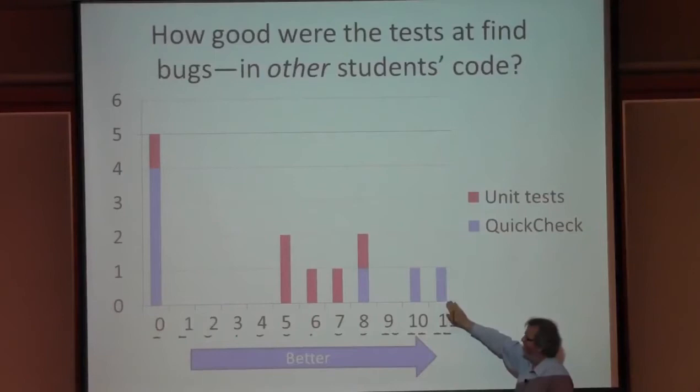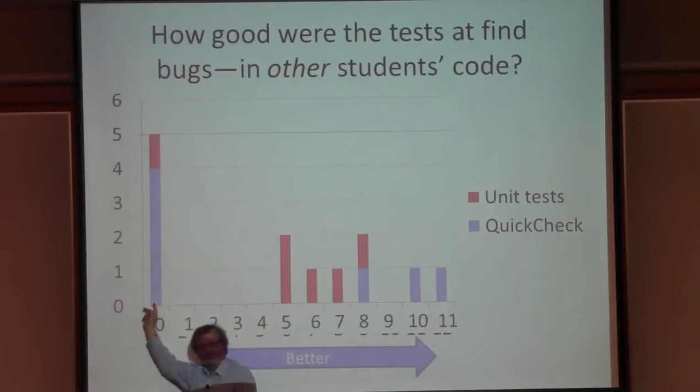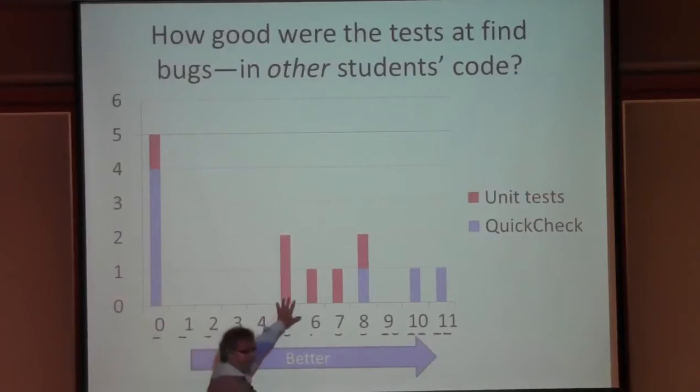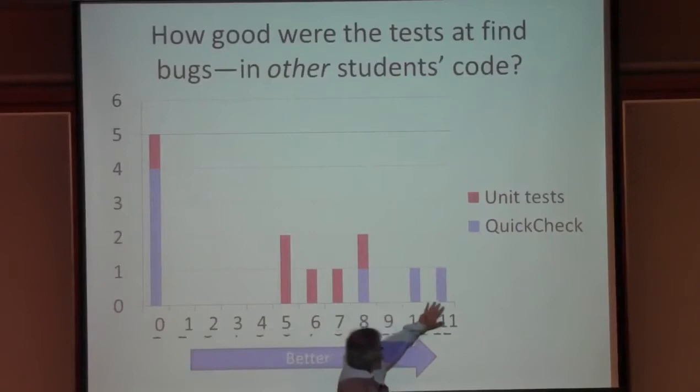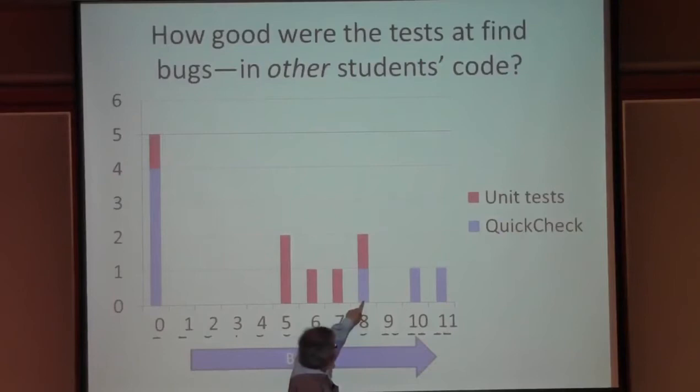Some test suites could find no bugs at all. Looking at the colours, the students asked to write unit tests - conventional test cases - by and large developed test suites that could find a fair number of bugs, but not all. The students asked to write QuickCheck properties did a lot better: one could find every possible bug, and the worst QuickCheck properties were as effective at finding bugs as the best set of test cases. That's a good result, and it's actually statistically significant even with a small number of students.